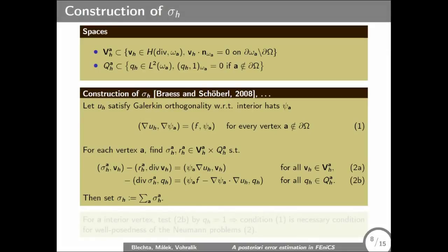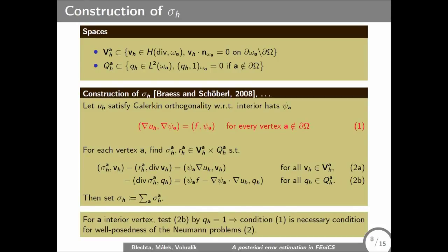This is solved on each patch. And the total reconstructed flux is just the sum. This Galerkin orthogonality, which is usually for many finite element approximations met easily, so this is just a necessary condition for well-posedness of the Neumann problems. The interior patches where the problem is Neumann, it's hidden here in those boundary conditions.